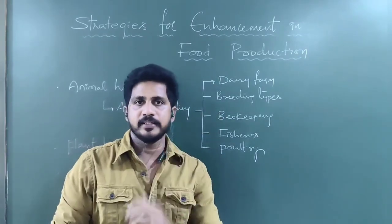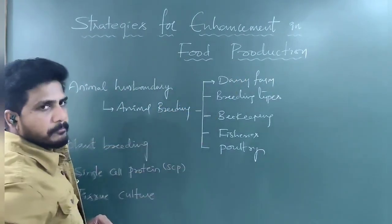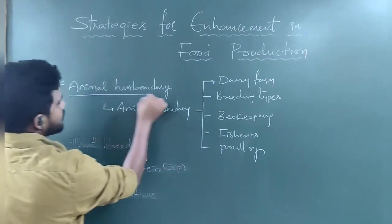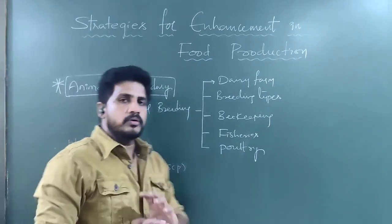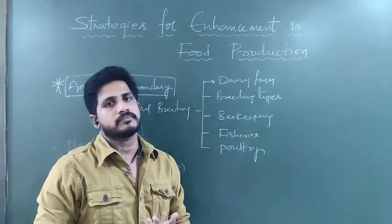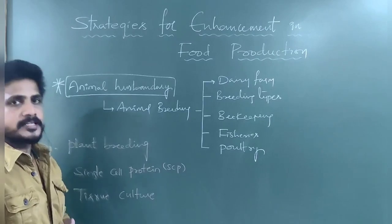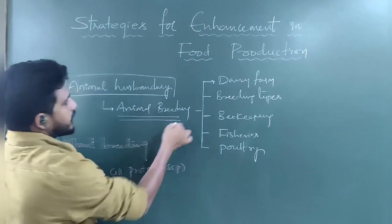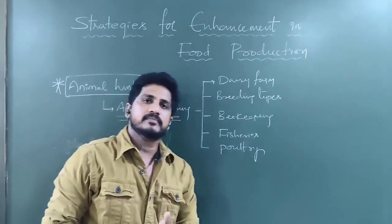The topic name is strategies for enhancement of food production. The first thing we are going to discuss today is animal husbandry — the process of taking care of animals for their growth, development, and the benefits they provide to humankind. Within animal husbandry, animal breeding is very important.